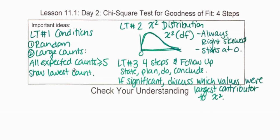All right, we're going to continue talking about the chi-square goodness of fit test. There's a four-step process, just like every other test. The first step is to state your hypothesis — your null and alternative hypothesis.